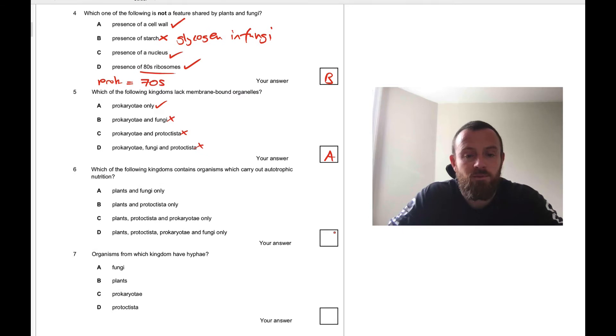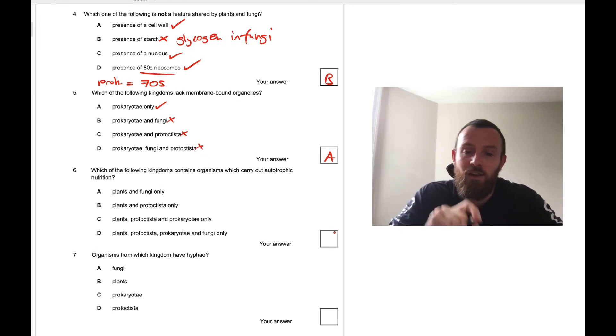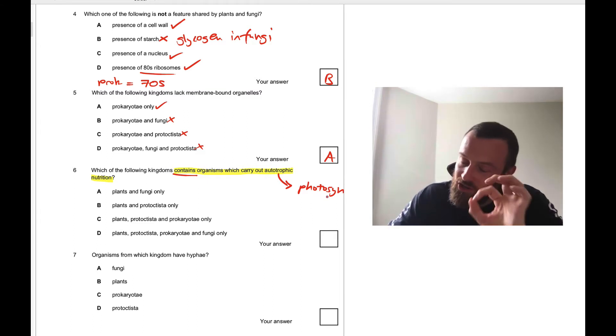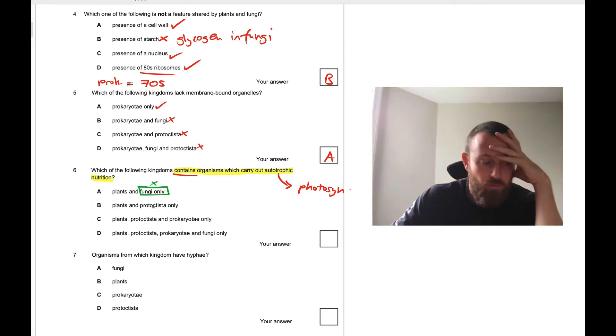Which of the following kingdoms contains organisms which carry out autotrophic nutrition? This is tricky wording. So much about biology is actually understanding the wording of the question. It says which of the following contains organisms which carry out autotrophic nutrition? The key word there is contains. So do any of this type of organism do autotrophic nutrition? Autotrophic basically is photosynthesis, but not just photosynthesis, it also includes chemosynthesis which occurs in deep sea vent bacteria.